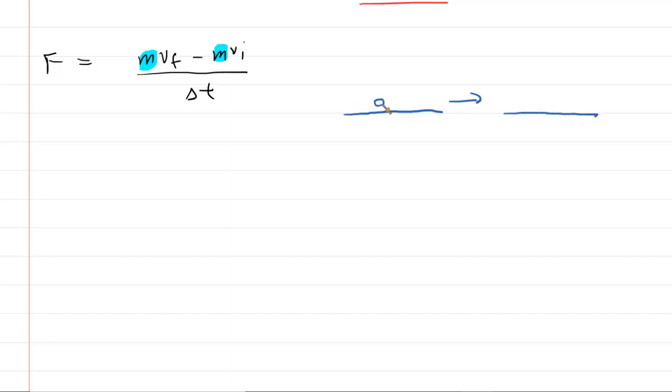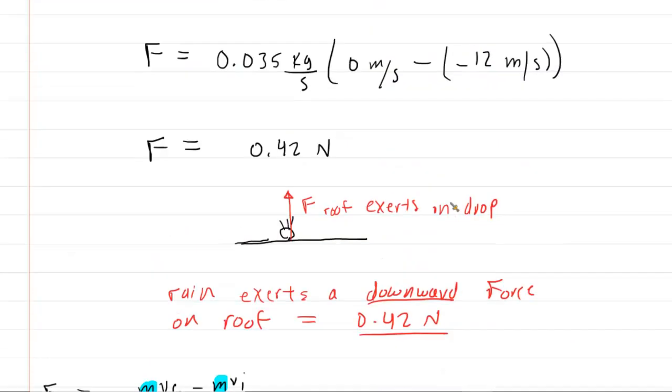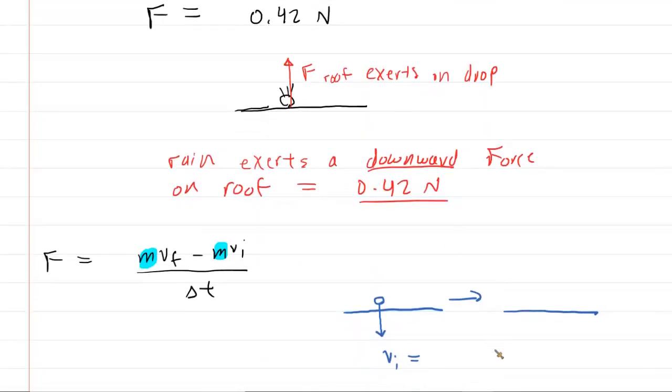So you can imagine a hailstone, again, with an initial velocity. And we can use that same value. What was it? Negative 12 meters per second.